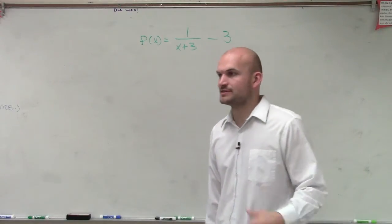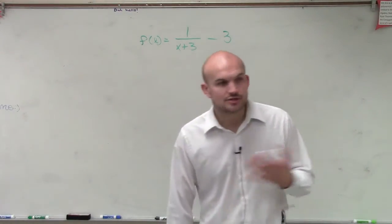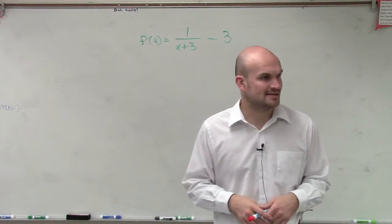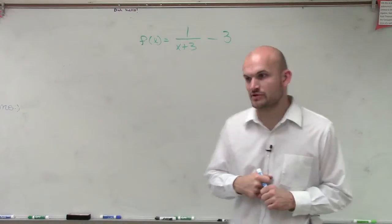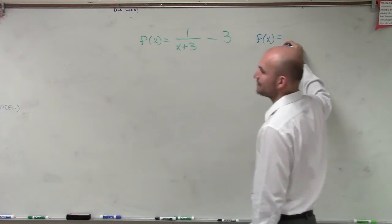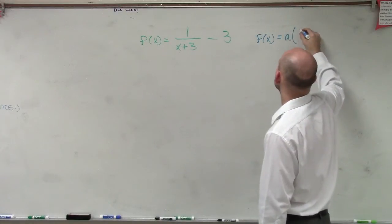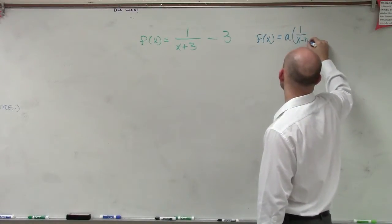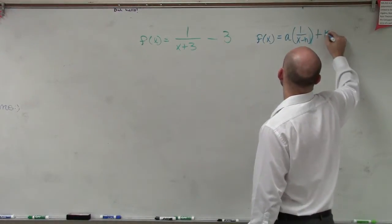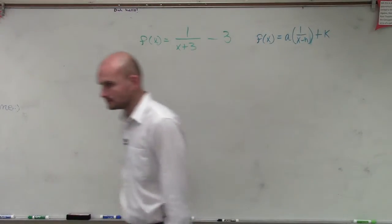So the way that I'm going to graph this is by using the transformations. To use the transformations, we have to understand what are the transformations of the reciprocal function. So the transformation of the reciprocal functions look like this: f(x) = a times 1/(x-h) + k.